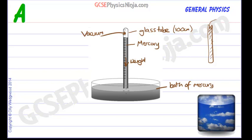But the column will not fall all the way down. Why is it supported at that point? If we measure the distance from there to the surface of the mercury reservoir, we would see that it's approximately 76 centimetres if you're at sea level.